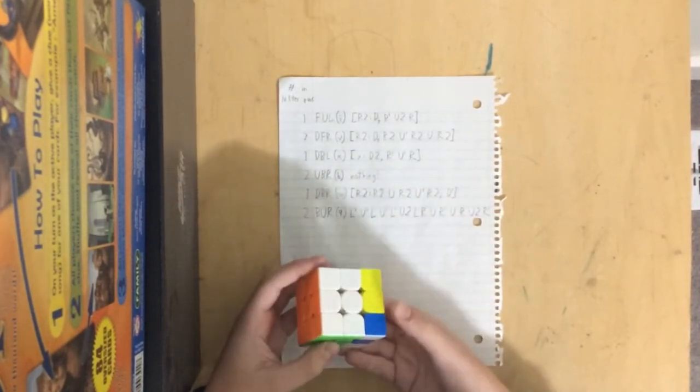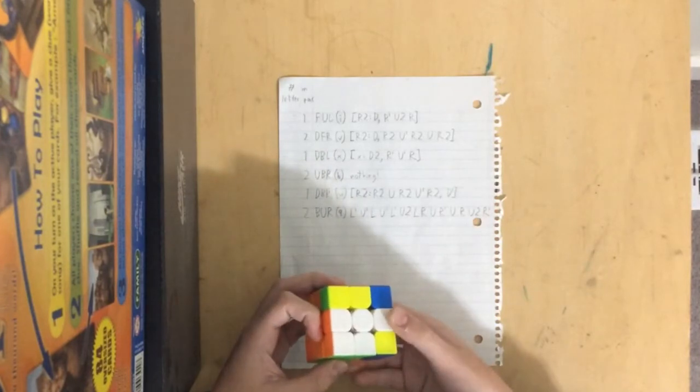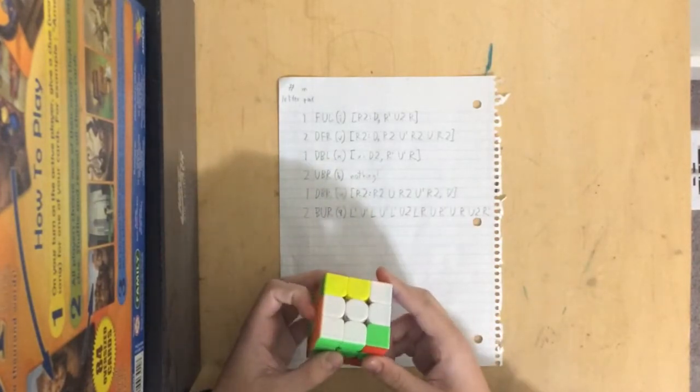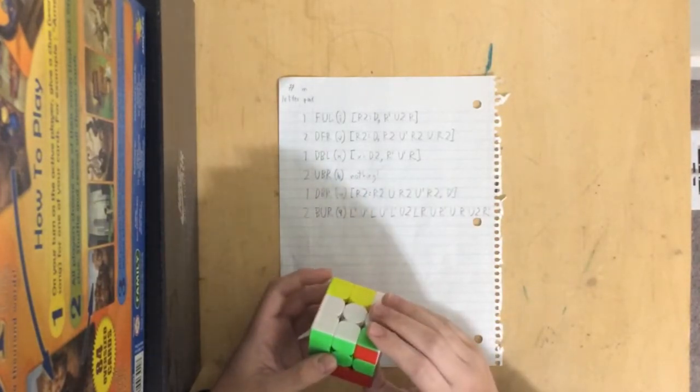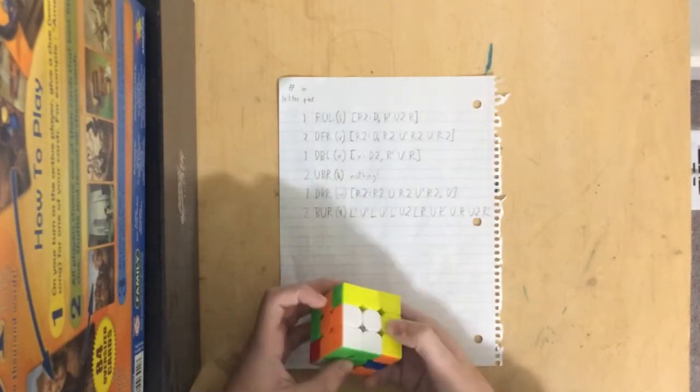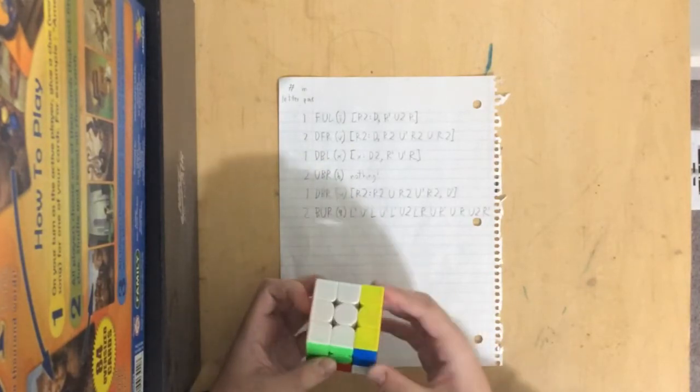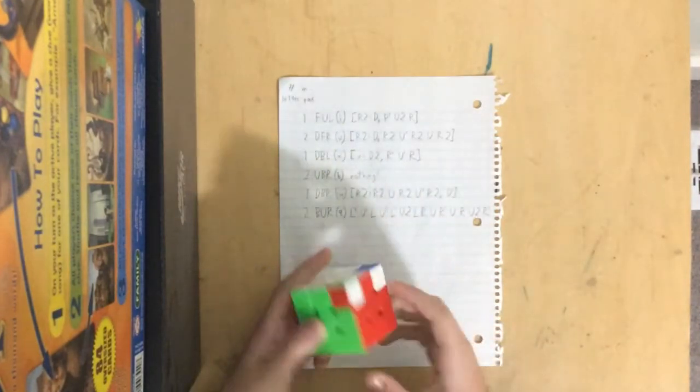So R2, and then R2, U, R2, U' R2, and then D', R2, U, R2, U' R2, D, and then reverse that R2. Boom, and it solved it.